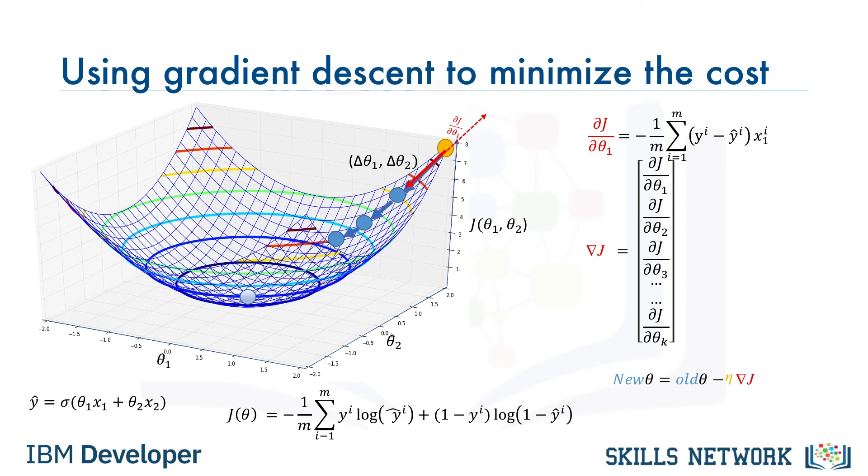So, these would be our new parameters. Notice that it's an iterative operation, and in each iteration, we update the parameters and minimize the cost until the algorithm converges on an acceptable minimum.